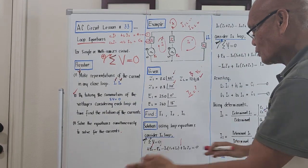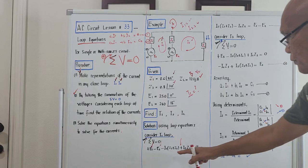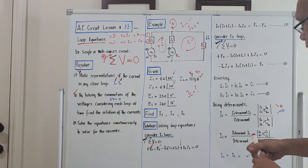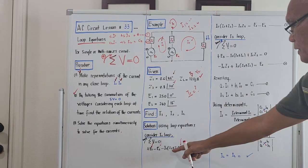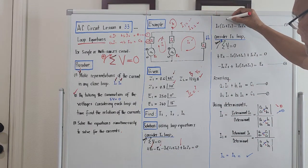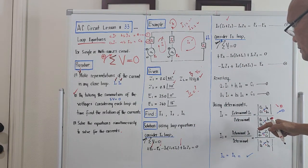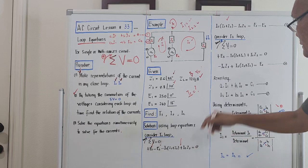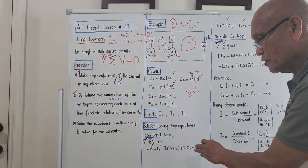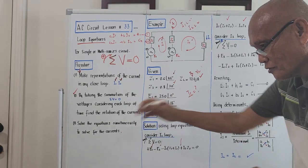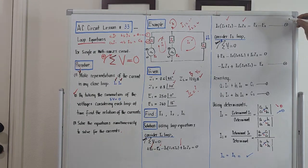Rearranging: we put the voltage drop terms on the right, so minus I1(Z1+Z2) becomes the left side coefficient, minus I2·Z2 moves to the right. E1 and E2 stay on the left but we interchange their location, so the right-hand side becomes E1 minus E2. Be careful here — one wrong sign and the entire solution will be wrong. E1 is positive, E2 is negative because it contradicts the I1 loop.